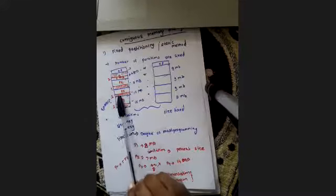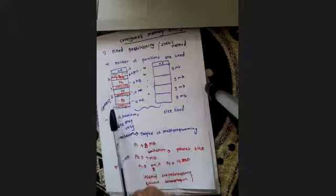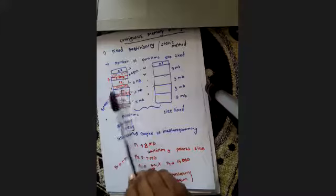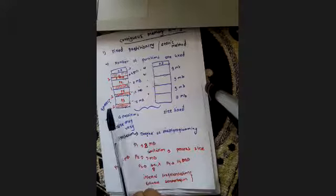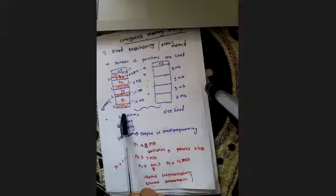External fragmentation is different. If you count the total remaining space across all partitions — say 2 MB, 1 MB, 2 MB, 2 MB — you have 7 MB total available. But if a new process requires 7 MB, you still cannot allocate it because the free space is scattered across different partitions. Even though total space is sufficient, the process cannot be placed — this is called external fragmentation.